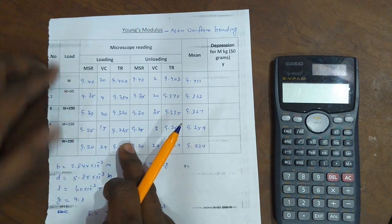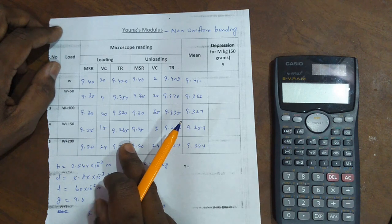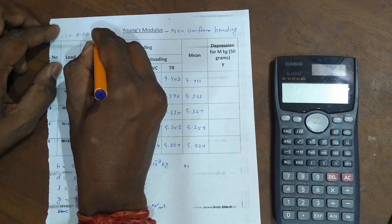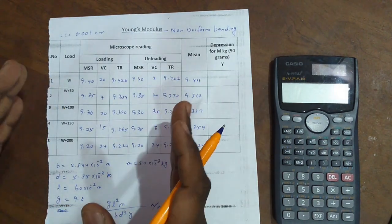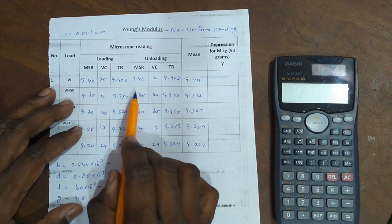For traveling microscopes, the least count is 0.001 centimeters. The total reading formula is MSR plus VC into least count. I got the answer as total reading values.